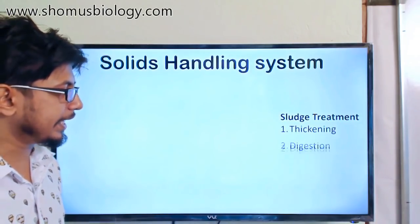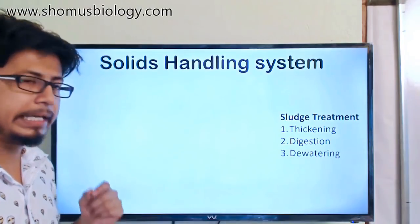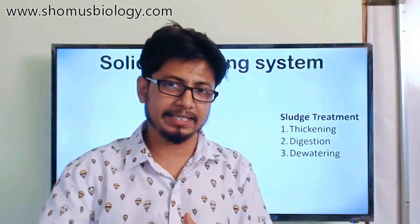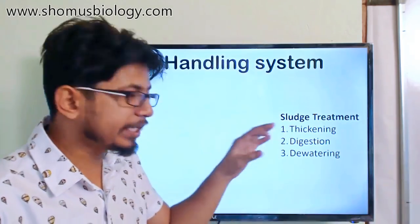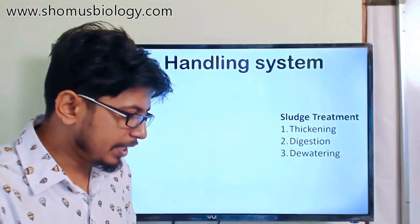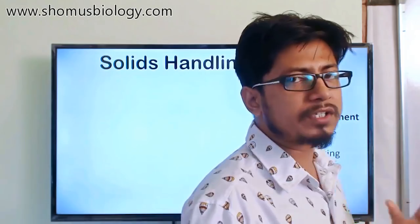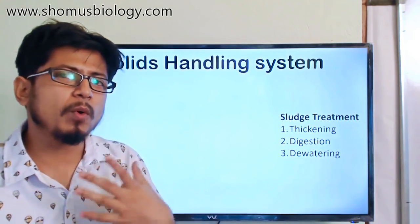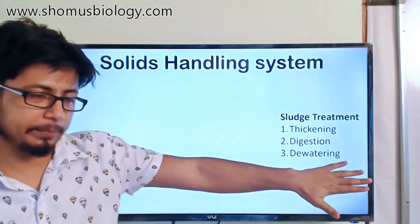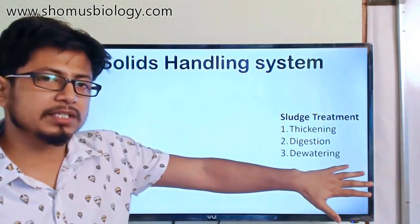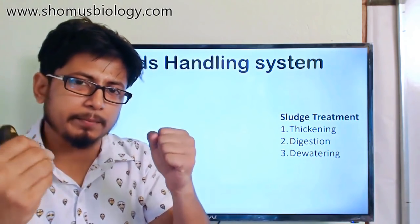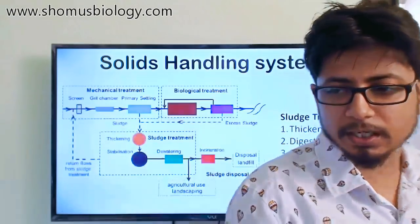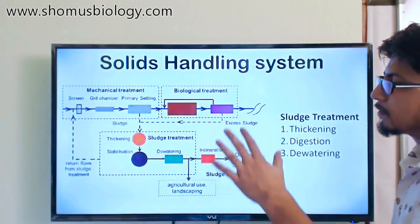Sludge treatment contains three sequential stages: thickening, digestion, and dewatering. Thickening is important because it allows us to handle the large volume of sludge properly in the next stage by condensing it. Digestion reduces the amount of sludge and kills unwanted microorganisms by heating. Finally, dewatering removes moisture after digestion, producing a condensed sludge cake that can be used as landfill.